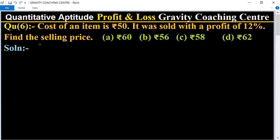This question is a very simple one. Here the cost price of the item is 50, means CP equal to rupees 50, and profit percent is also given, profit percent equal to 12%. So find their selling price.